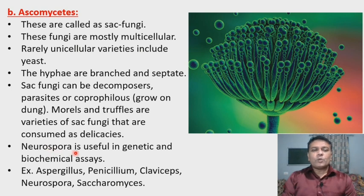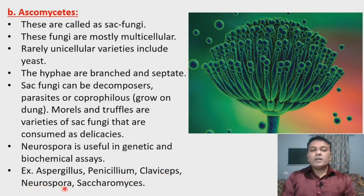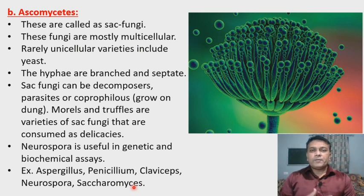Neurospora is a type of Ascomycetes used in genetic and biochemical experiments. Common examples of Ascomycetes include Aspergillus, Penicillium — from which the antibiotic Penicillin is obtained — Claviceps, Neurospora, and Saccharomyces, a unicellular yeast used in the production of different food products.